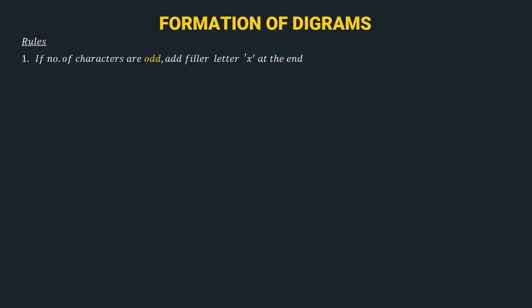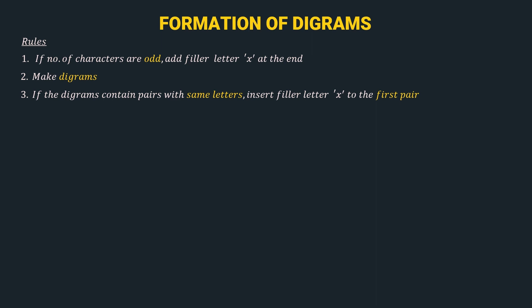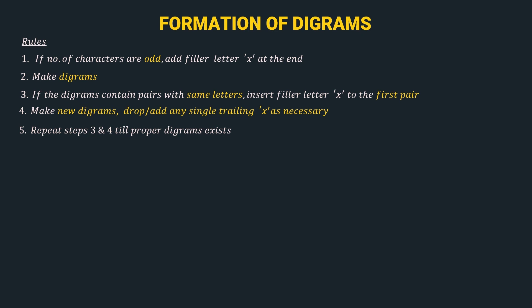Now let's move to step 2 — formation of digrams. A digram is nothing but a pair of alphabets. The 5 rules for formation of digrams are: Rule 1 — if the number of characters is odd, add filler letter X at the end. Rule 2 — make digrams, i.e. pair the alphabets. Rule 3 — if a digram contains a pair with same letters, insert filler letter X into the first such pair. Rule 4 — make new diagrams and drop or add any single trailing X as necessary. Rule 5 — repeat steps 3 and 4 until proper diagrams exist.